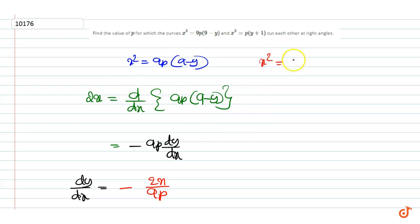Now, the second curve is x² = p(y+1). Here, dy/dx is equal to 2x/p.